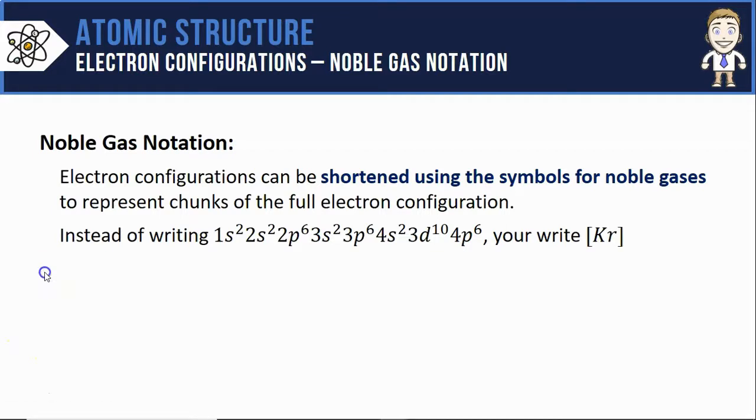Here's the standard format for a noble gas notation. Looks something like this. First thing you see, there are the square brackets. That's where your noble gas symbol is going to go.